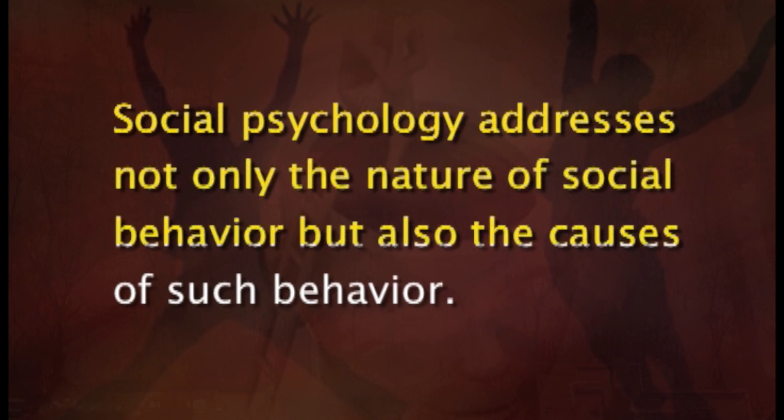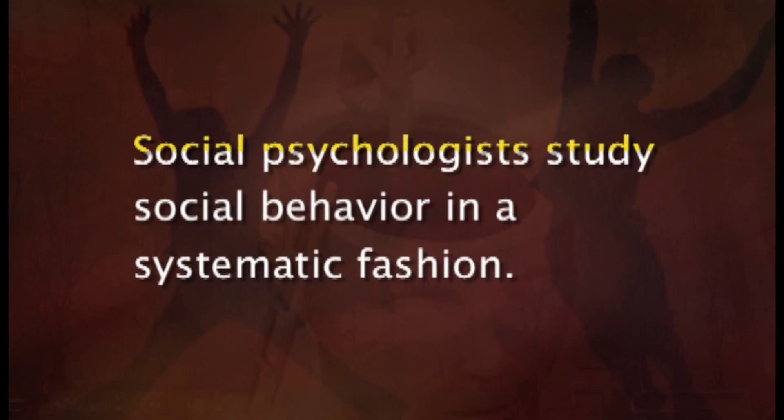The second feature states that social psychology addresses not only the nature of social behavior but also the causes of such behavior. Social psychologists seek to discover the preconditions that cause various social behaviors. Causal relations among variables are important building blocks of theory, which in turn is crucial for prediction and control. The third feature indicates that social psychologists study social behavior in a very systematic fashion, relying on formal research methodologies including experimentation, structured observation, and sample surveys.